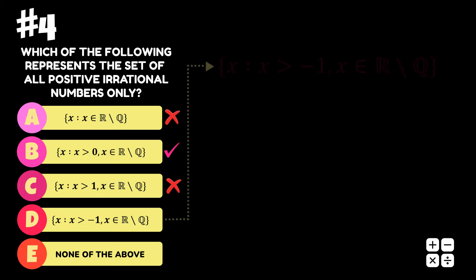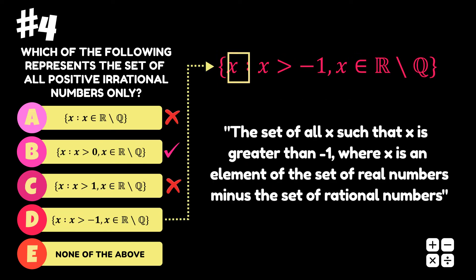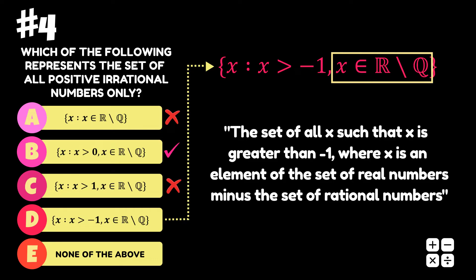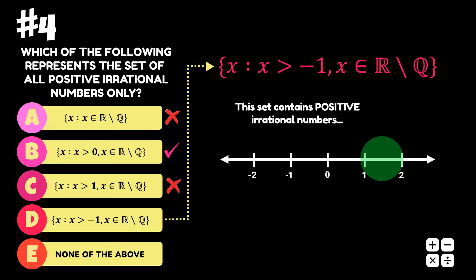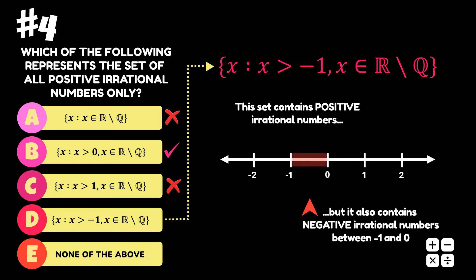Looking at Option D, we can describe this set as the set of all x such that x is greater than negative 1, where x is an element of the set of real numbers minus the set of rational numbers. This set contains positive irrational numbers — that is, irrational numbers greater than 0 — but it also contains negative irrational numbers between negative 1 and 0. We want a set that contains only positive irrational numbers, so Option D is incorrect. Given that Option B is correct, we can disregard Option E, and therefore the overall answer to this question is Option B.